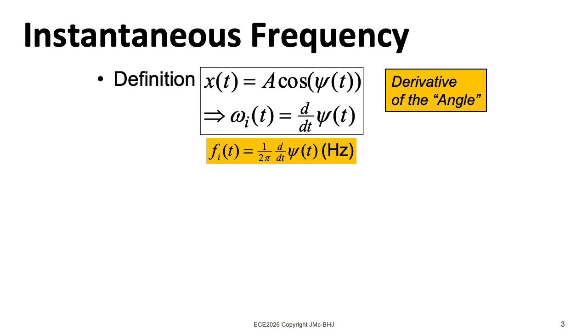But I just want to give you the gist of things. We'll need the idea of the instantaneous frequency of a sinusoid, which you get by taking the derivative of the angle function psi. That gives you the instantaneous frequency in radians per second.